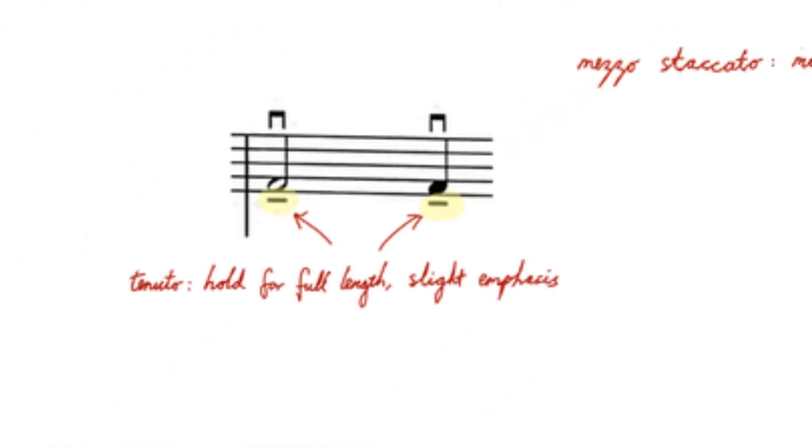The lines under these notes are tenuto marks, which can mean a few different things. They can mean to hold a note for its full length, or to give the note a slight emphasis. In this piece, it's used each time we get two down bows in a row, and perhaps serves as a reminder to leave a gap in the sound so that these two notes don't sound like one continuous long note.